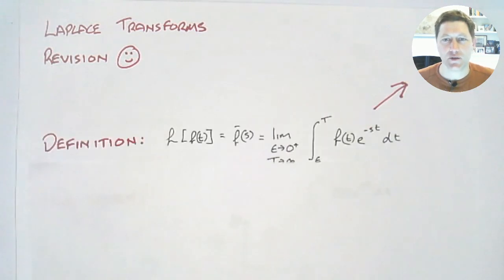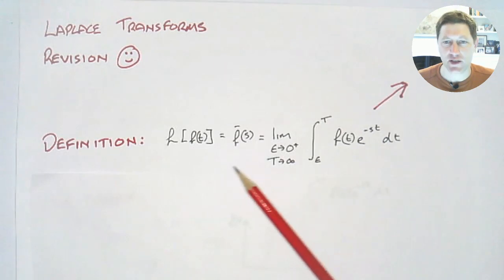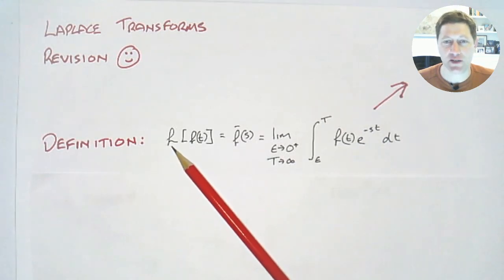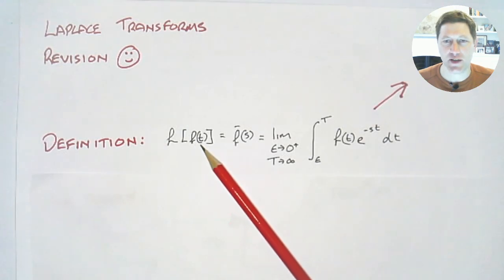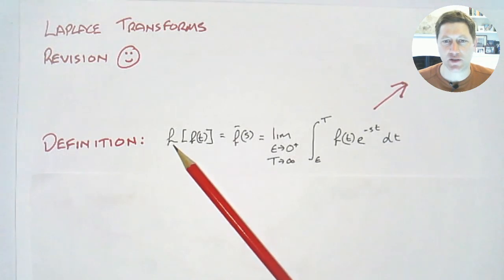So you'd have seen this before, the definition of a Laplace transform, and we've given it the rigorous definition here. First of all, Laplace transform, we write it as a curly L and we put our function in square brackets that we're going to transform. So we've got a function f(t) which will be Laplace transformed.